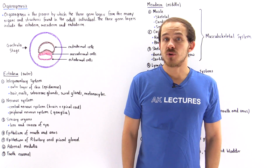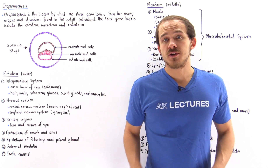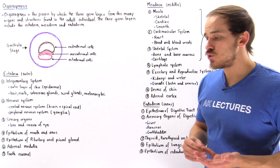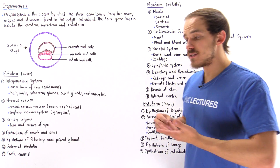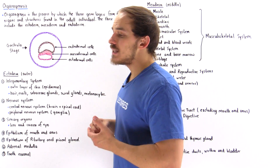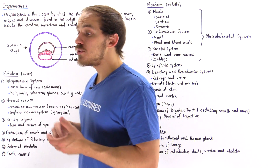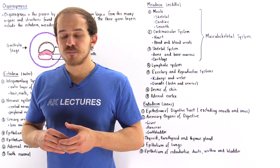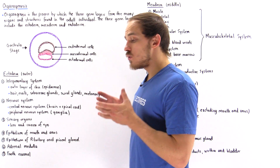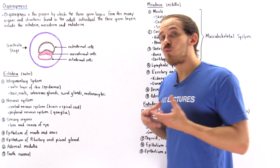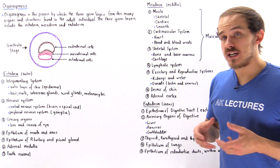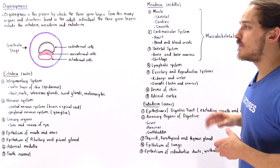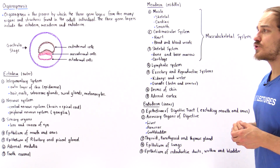Organogenesis is the process by which the different types of tissues, organs, and systems are formed by the developing embryo and fetus. In this lecture, we're going to focus on which organs and systems are formed by the three different germ layers.